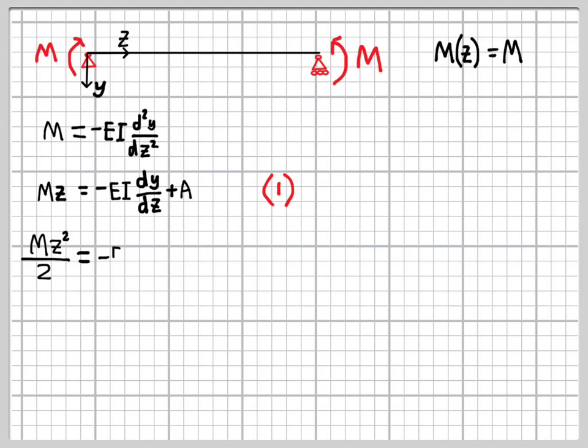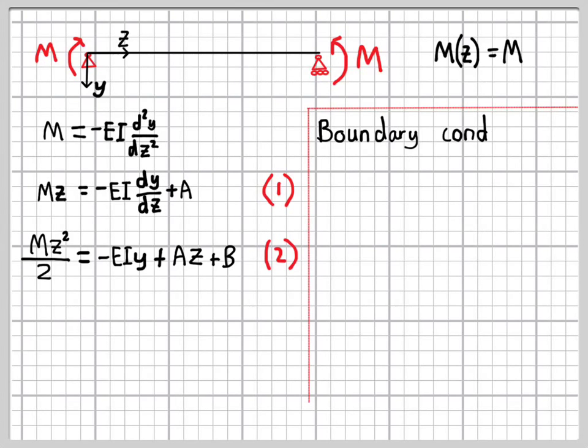We then integrate again. We can still integrate very easily. We get an equation we'll call equation 2 with two unknowns, a and b, in it. At this point, we need to work out what a and b are, and to do that, we'll introduce what are known as boundary conditions to the problem. We'll do this just to one side.